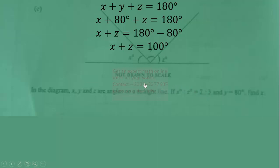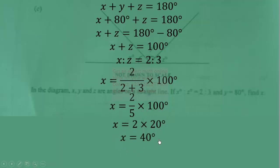So to find x here, it will be x ratio, which is 2 over the total ratio, times the amount we are sharing or the angle we are sharing. That will be equal to 2 over 5 times 100 degrees. And when we do that, we get x to be equal to 2 times 20 degrees. Hence, x is equal to 40 degrees.